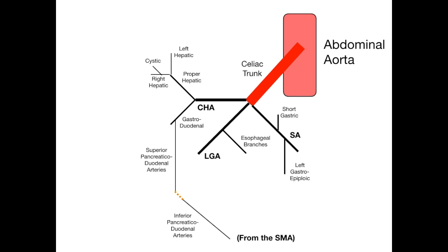The superior pancreaticoduodenal artery comes from the gastroduodenal, which comes from the common hepatic, which comes from the celiac trunk. The inferior pancreaticoduodenal artery comes from the superior mesenteric artery, the next major trunk down the abdominal aorta after the celiac trunk. This anastomosis is the only one connecting two major trunks, so it's incredibly important to know.